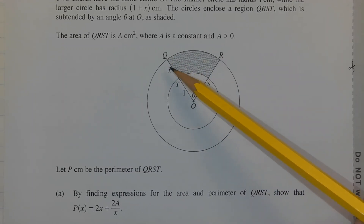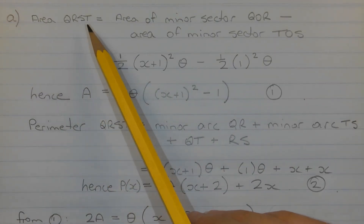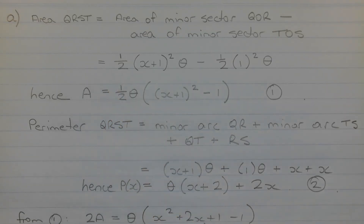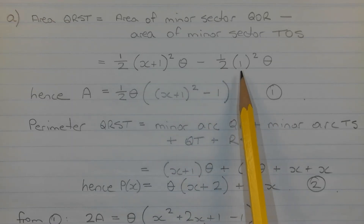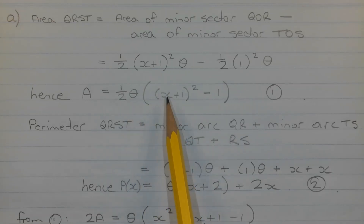The radius of sector QOR is x plus 1 and the radius of sector TOS is 1. Area QRST equals area of minor sector QOR minus area of minor sector TOS. Using the half r squared theta formula for the area of a sector with radius r and angle theta in radians, we get half times (x plus 1) squared times theta minus half times 1 squared times theta, which is just half theta. Factorizing out half theta gives a equals half theta times open bracket (x plus 1) squared minus 1 close bracket. We'll call this equation number 1.